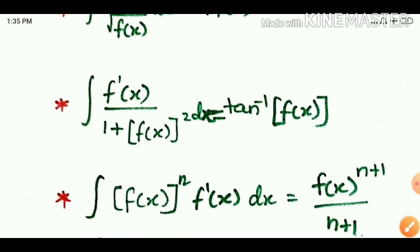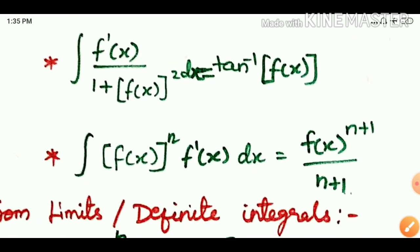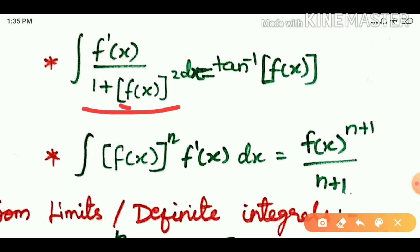Let's see the next property: integral of f'(x) divided by 1 plus f(x) the whole square. When 1 plus f(x) squared is in the denominator and the first derivative f'(x) is in the numerator, the answer is tan inverse of f(x).